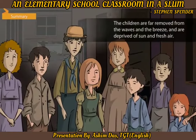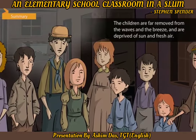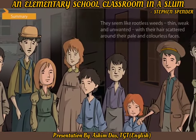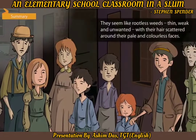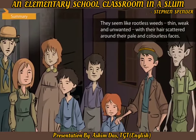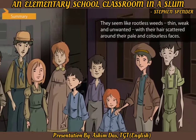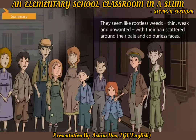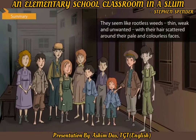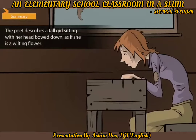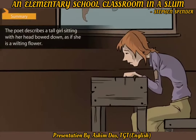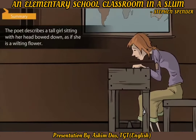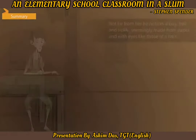The children are far removed from the waves and the breeze and are deprived of sun and fresh air. They seem like rootless weeds, thin, weak and unwanted, with their hair scattered around their pale and colorless faces. The poet describes a tall girl sitting with her head bowed down as if she is a wilting flower.